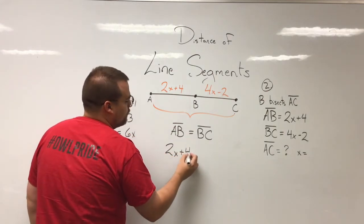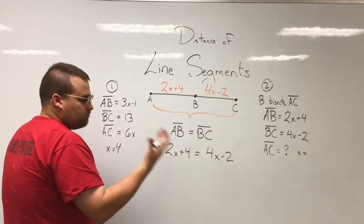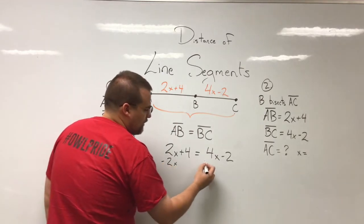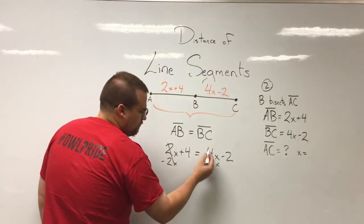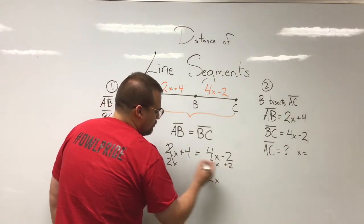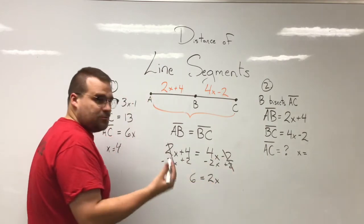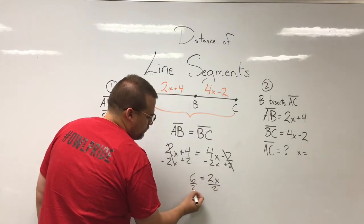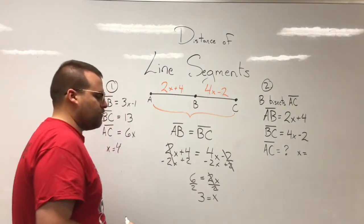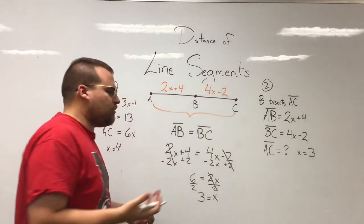2x plus 4 equals 4x minus 2. Now we have just another algebra problem like we did before. So I'm going to solve this. Subtract that 2x on both sides, get 4x minus 2x to be 2x. Add that 2 to the other side, get those to cancel out, and we get 6. So 2x equals 6. Now let's get x on its own, and we find out that x equals 3. Cool, x equals 3.